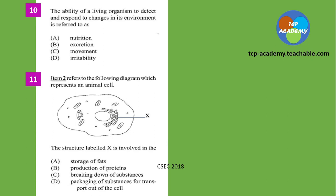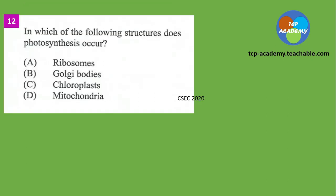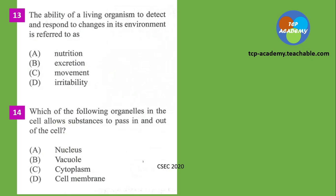Question number eleven: item two refers to the following diagram, which represents an animal cell. The structure labeled X is involved in A, B, C, or D — we're seeing this question for the second time. Question number twelve: in which of the following structures does photosynthesis occur? That comes from the 2020 paper.